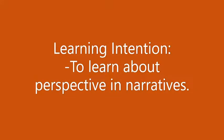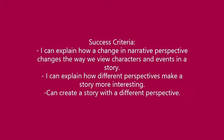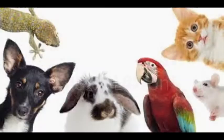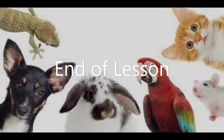So we've ended the lesson. Our learning intention was to learn about perspective in narratives. Our success criteria were to explain how a change in narrative perspective changes the way we view characters and events — which we did by looking at how we've learned new things through the introduction of new characters and perspectives. We looked at how different perspectives make a story more interesting by examining our text, and you've created a story from the perspective of an animal in your house. That's the end of the lesson — thank you for watching, and I'll see you next time.